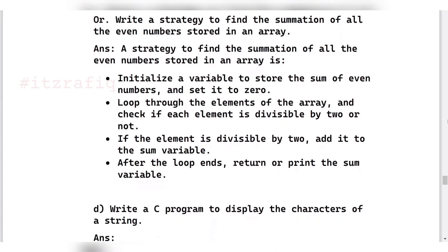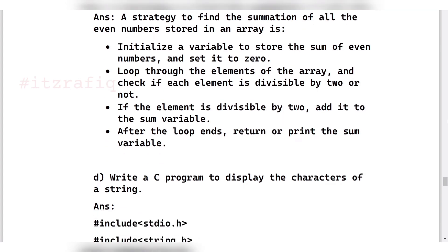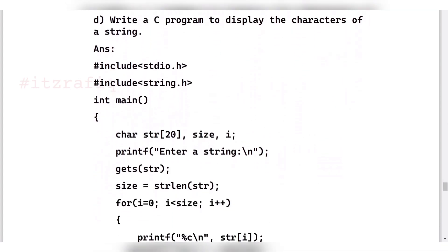Next question: Write a strategy to find the summation of all the even numbers stored in an array. We can have this strategy. We will have a variable sum where we are going to store all the even numbers, and we will set the sum as 0. After that, we will use a loop and we will check all the elements whether they are divisible by 2 or not. If they are divisible by 2, we will add the number to the variable sum. And when the loop ends, we will display the value of sum. So this way we can do it.